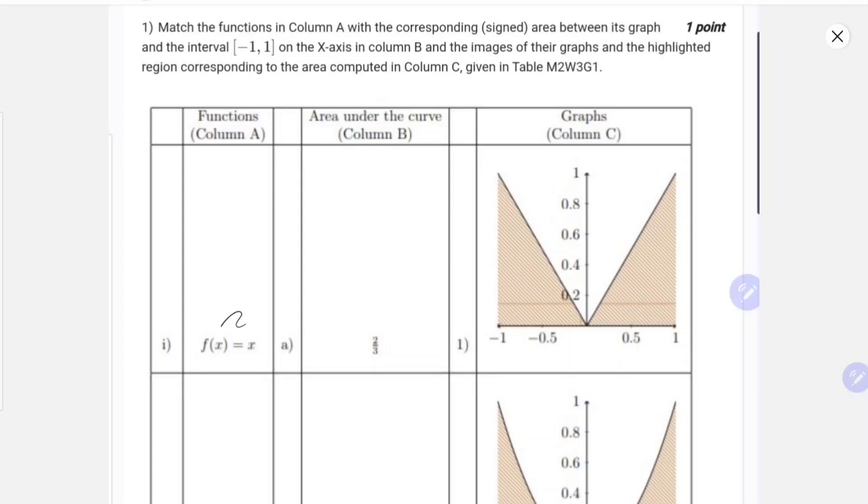Okay guys, so this is Week 9 graded assignment. Let's start with the first question. The first question says match the following in column A with the corresponding signed area between its graph and the interval minus 1 to 1 on the x-axis in column B, and the images of their graphs with highlighted region corresponding to the area computed in column C.